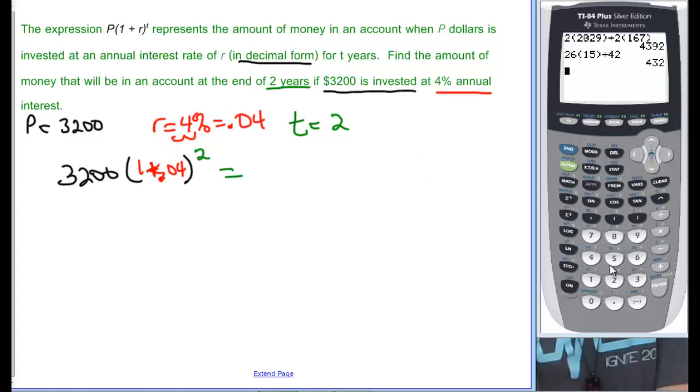And I'm just going to come right over here to my calculator and let it do all the work. 3200, parenthesis, 1, plus .04, close the parenthesis, and then remember exponents is caret, and then 2. And press enter, and we see that that's 3461.12.